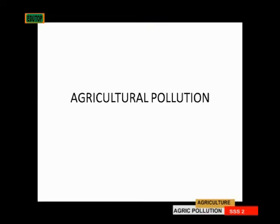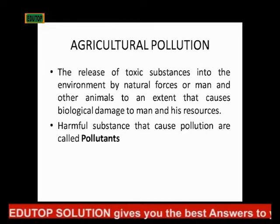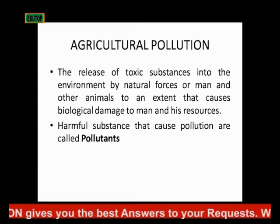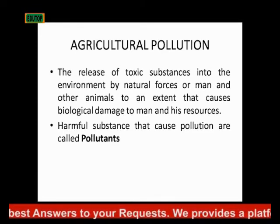The last disadvantage is that it needs very deep excavation of soil. So, we've seen the two types of drainage system — the surface and subsurface drainage system — and considered their advantages and disadvantages. Now, we move on to talk about agricultural pollution. Agricultural pollution is the release of toxic substances into the environment by natural forces, man, or other animals to an extent that causes biological damage to man and his resources.